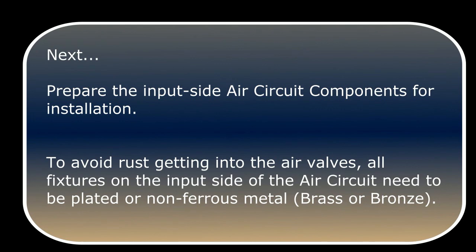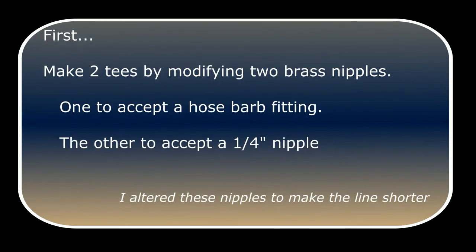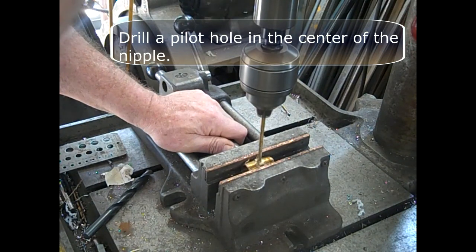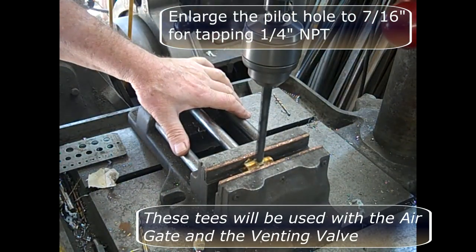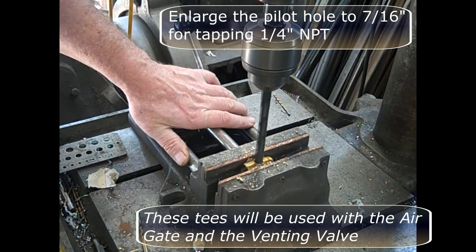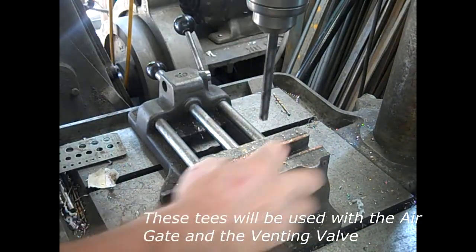Next, we're going to prepare the input side air circuit components for installation. To avoid rust getting into the air valves, all fixtures on the input side of the air circuit need to be plated or non-ferrous metal, which would be brass or bronze. First, we're going to make two T's by modifying two brass nipples, one to accept a hose barb fitting, the other to accept a quarter inch nipple. Drill a pilot hole in the center of the nipple. Then enlarge the pilot hole to 7/16 for tapping one quarter inch MPT. These T's will be used with the air gate and the venting valve.